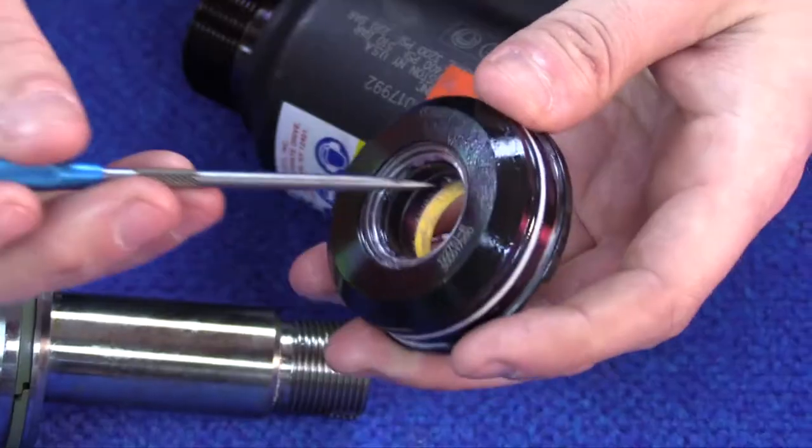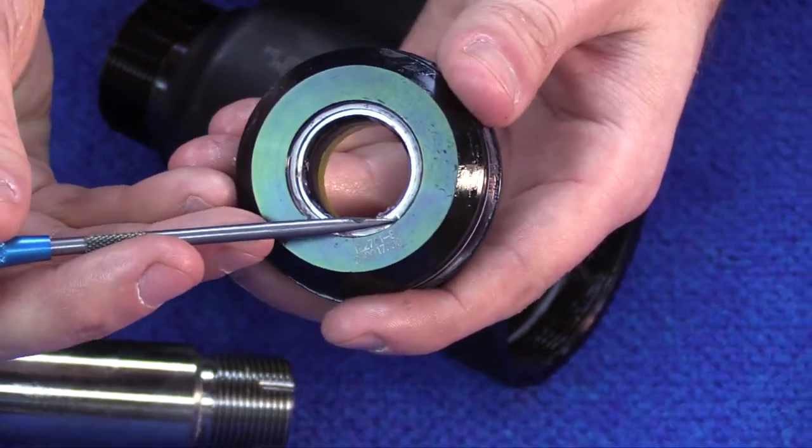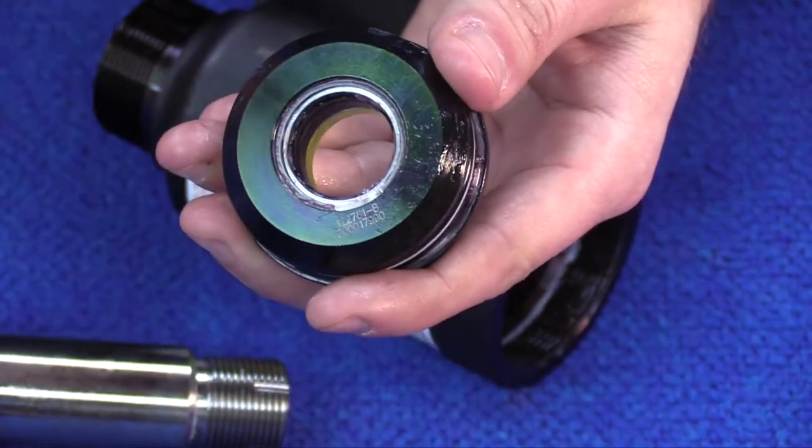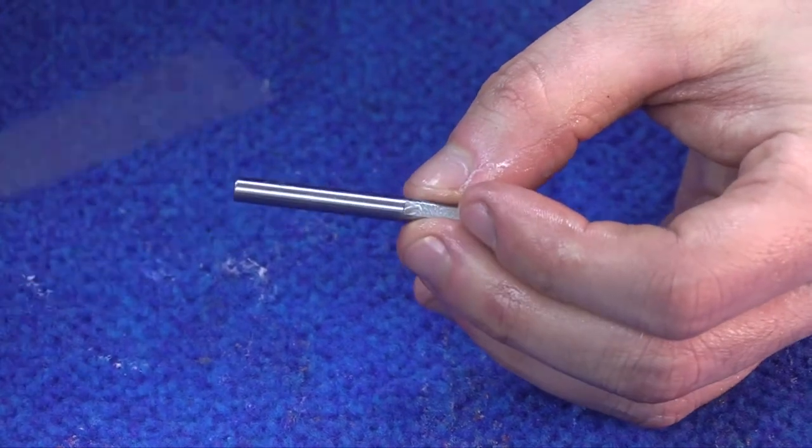Also inspect the rear gland. Be sure to remove the C-clip replacing the poly seal on the inside. Inspect the dump valve for any signs of scoring, scratches, or wear. Replace as necessary.